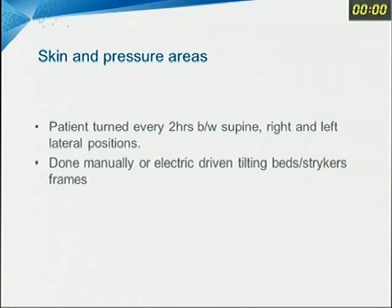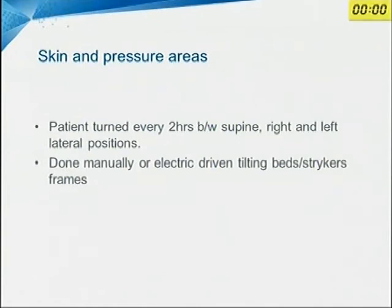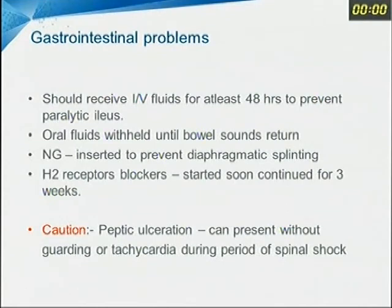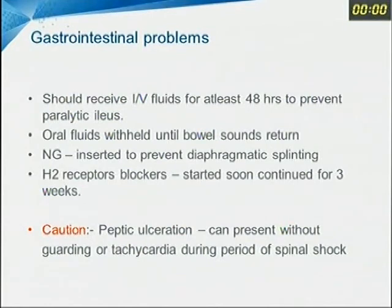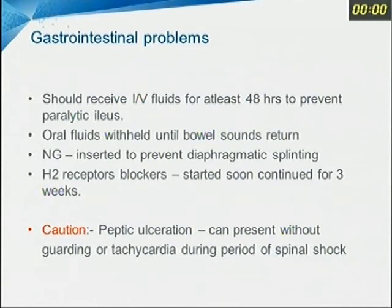Skin and pressure area injuries — bed sores — can be prevented by turning the patient every two hours in right, left, and lateral positions. This can be done manually or with electrically driven tilting beds. For gastrointestinal problems, the patient should receive IV fluids for at least 48 hours to prevent paralytic ileus; oral fluids should be withheld until bowel sounds return. An NG tube and H2 receptor blockers should be given to prevent peptic ulceration.